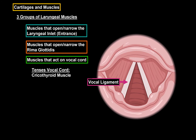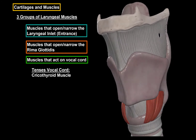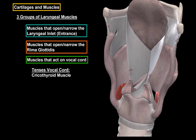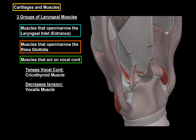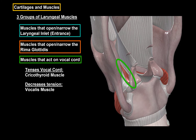There are muscles that tense the vocal cord, such as the cricothyroid muscle, situated here. When they contract, they pull the thyroid cartilage to the front, tensing the vocal ligament. If you look posteriorly and zoom in a little bit, when the thyroid cartilage moves forward, the vocal cord is tensed. The other muscles decrease the tension of the vocal cords, such as the vocalis muscle, situated right next to the vocal cords. When they contract, they pull the arytenoid cartilage forward to decrease the tension of the vocal cords.